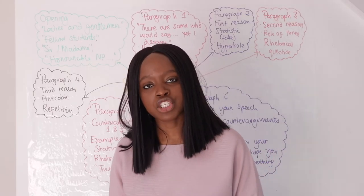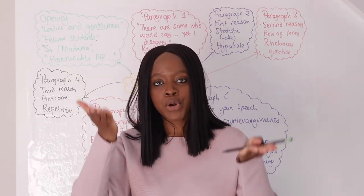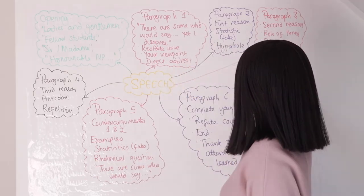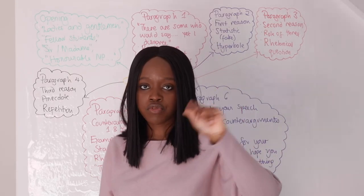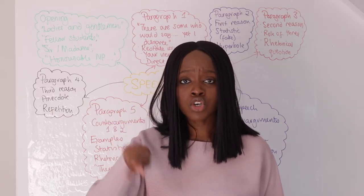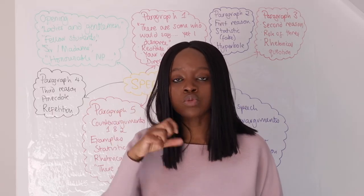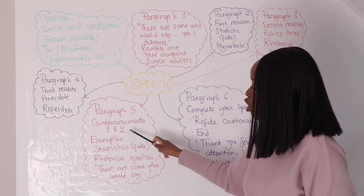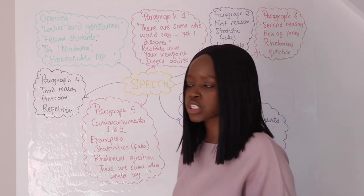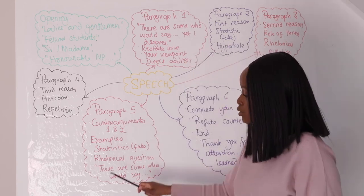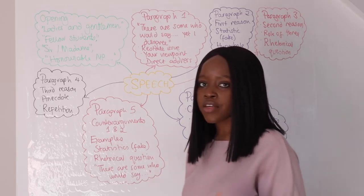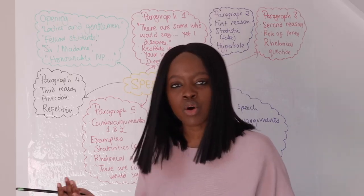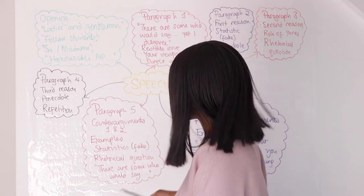Given that this question is an argument, you need to show that you can appreciate both sides. In addition to your three arguments, you balance them by giving two counter arguments — two reasons why some people will disagree with you. In paragraph five, add counter arguments one and two. You could introduce them by saying 'There are some people who would say...' or 'There are some people who disagree with me and would argue that climate change is not a big deal because...'